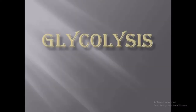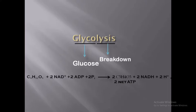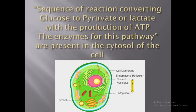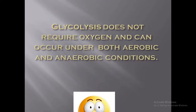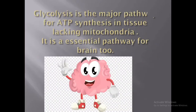We are going to discuss glycolysis. Glycolysis is defined as the sequence of reactions converting glucose to pyruvate or lactate with the production of ATP. The enzymes for this pathway are present in the cytosol of the cell. Glycolysis does not require oxygen and can occur under both aerobic and anaerobic conditions. It is the major pathway for ATP synthesis in tissues lacking mitochondria, and is also an essential pathway for the brain.